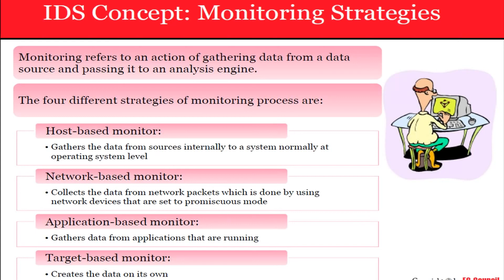Then we have the network-based monitor, which collects data from network packets using different network devices set to promiscuous mode. I just remembered to do a Cain & Abel demo — I'm going to show you how scanning happens in different modes, and then I'll try to bypass some security patterns via software like Wireshark, or via some hardware as well.